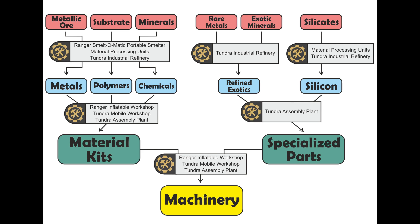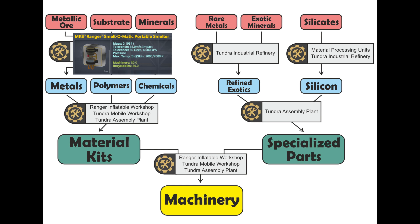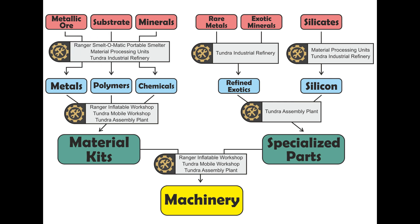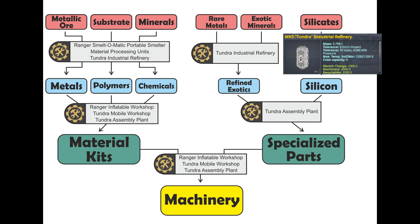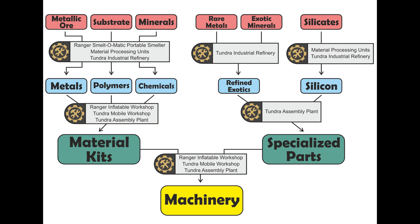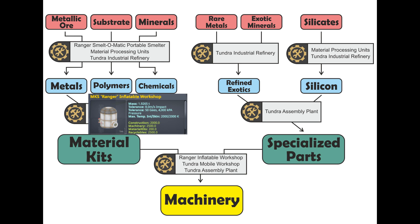Once you have mined metallic ore, substrate, and minerals, you can process them into metals, chemicals, and polymers respectively in any of the three processing plants: the Ranger Smeltomatic portable smelter, any of the three Material Processing Units, or the Tundra Industrial Refinery. Rare metals and exotic minerals are processed in the Tundra Industrial Refinery into refined exotics. And silicates are processed into silicon in the Material Processing Units or the Tundra Industrial Refinery. At this stage we have metals, chemicals, and polymers on one side of the chain, and with those we can produce material kits in the Ranger Inflatable Workshop, Tundra Mobile Workshop, or Tundra Assembly Plant.